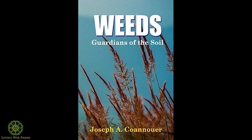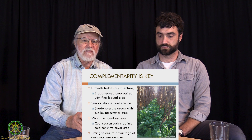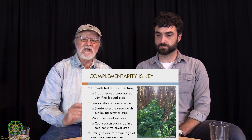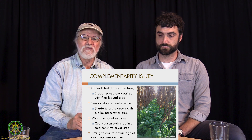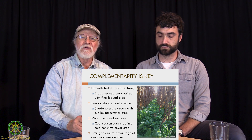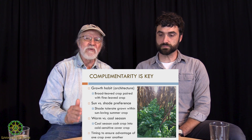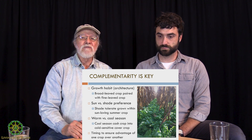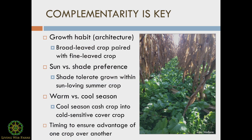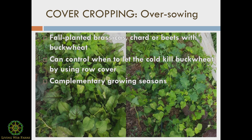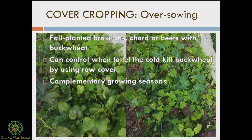The book describes seeing the purslane example happen in a field: as a young person the author weeded for a farmer, and the farmer came out at lunch and said 'leave the purslane in, it's good for the corn.' Coming back late that summer after a severe drought, the half of the field where purslane had been weeded out was shriveled up, while the half that still had purslane was green and thriving. It's a great example of what we're talking about — and purslane is delicious to eat too.